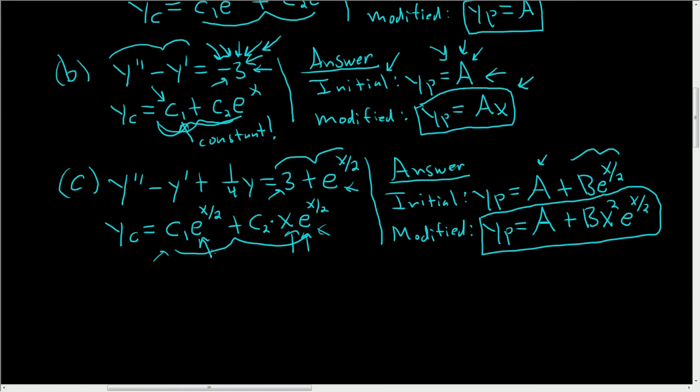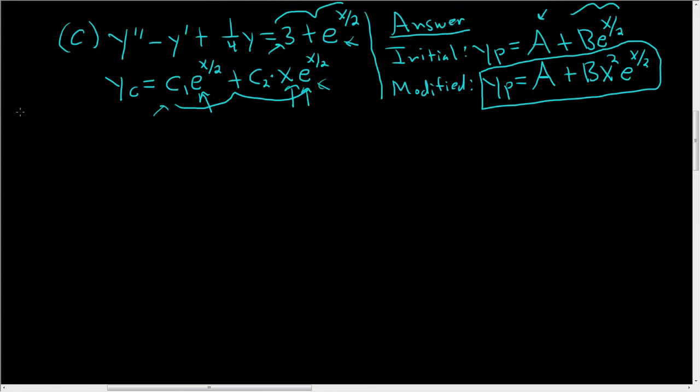Let's try another one. y double prime plus y equals 3x sine x. This one's super hard. Here, the complementary solution will be c sub 1 cosine x plus c sub 2 sine x. All right. Here's where it gets tough.